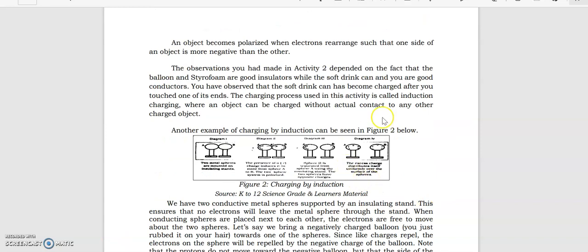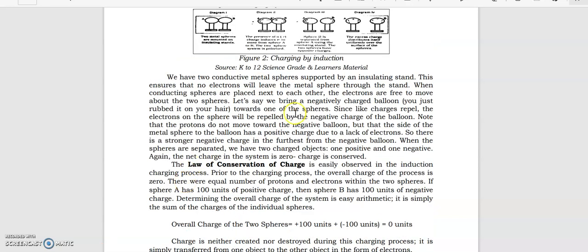Going back to our lesson, in this type of charging polarization will occur. What happens during polarization? The charges rearrange. For example, you have a sphere and a negatively charged balloon that you bring close to it without touching. What happens in that sphere is the electrons will go to the opposite end, and the protons will stay on the side closer to the balloon.